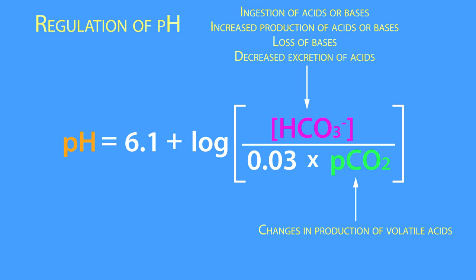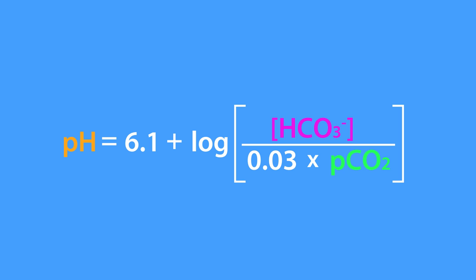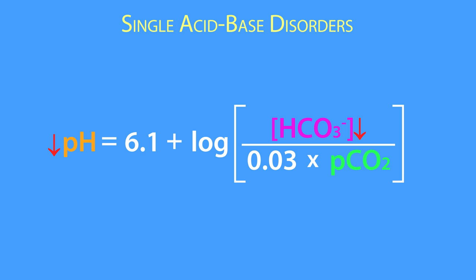On the other hand, the partial pressure of CO2 is affected by changes in the production of volatile acids, pulmonary ventilation, and composition of the inspired air. In simpler terms: reduced bicarbonate concentration is associated with metabolic acidosis, increased bicarbonate concentration with metabolic alkalosis, increased partial pressure of CO2 with respiratory acidosis, and decreased partial pressure of CO2 with respiratory alkalosis.